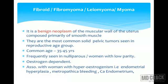It is a benign neoplasm of the muscular wall of the uterus and it is composed of smooth muscle cells. They are the most common solid pelvic tumors of reproductive age group, usually found between 35 to 45 years of age, and frequently seen in nulliparous patients and women with low parity.